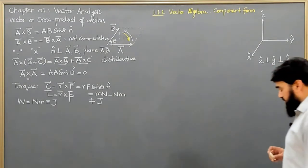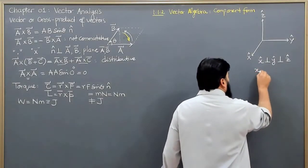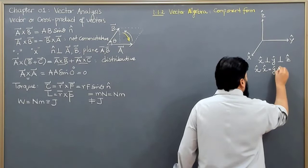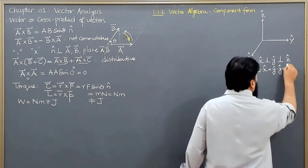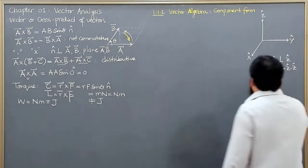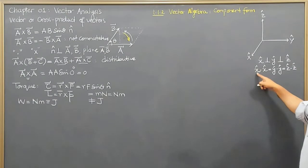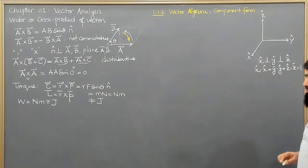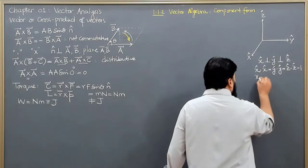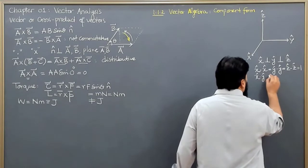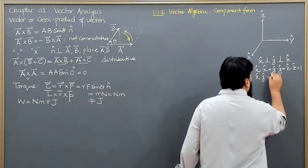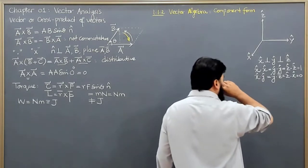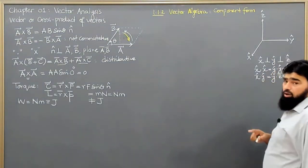Because these unit vectors are perpendicular to each other, there are important calculations involving them. The dot product of any basis vector with itself — x·x, y·y, or z·z — equals one, since the magnitude is one and the angle between them is zero. The dot product of any basis vector with a different basis vector, such as y·z or z·x, is always equal to zero, because there is no contribution of one along the other.